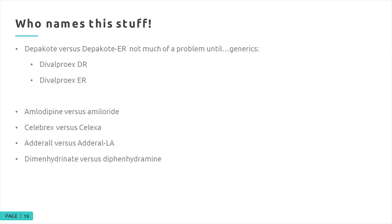More brand name confusion: amlodipine versus amiloride are very easy to confuse at the 5 mg dose. Celebrex versus Celexa — type in CELE 20 and depending on your database, it might pull Celebrex 200 or Celexa 20. Adderall versus Adderall LA, and dimenhydrinate versus diphenhydramine are all FDA-approved names that cause great confusion.